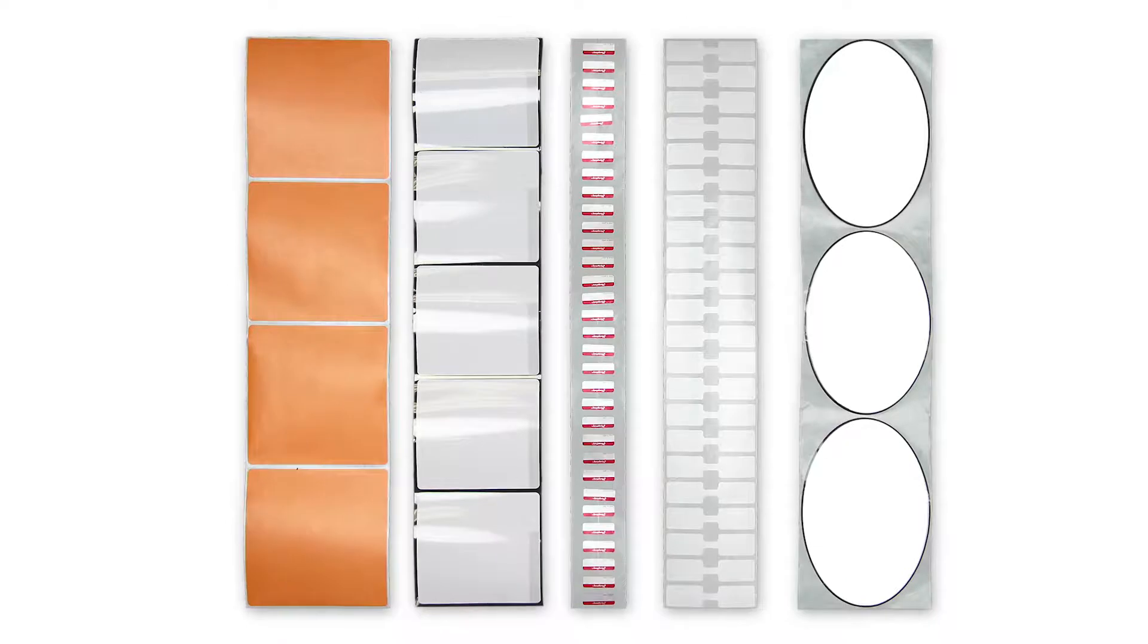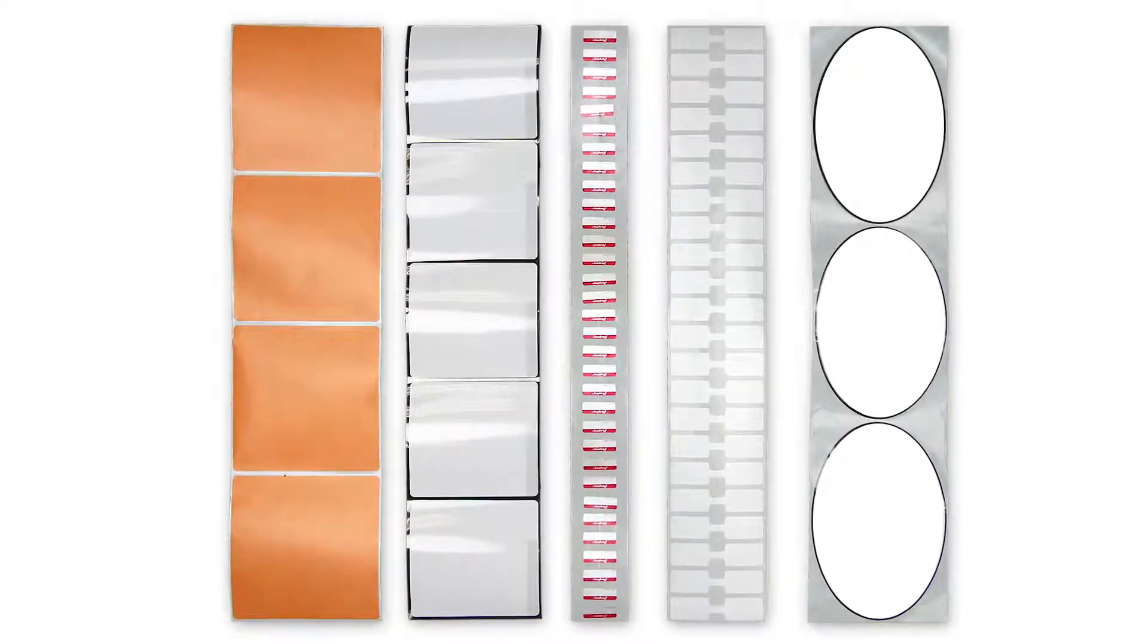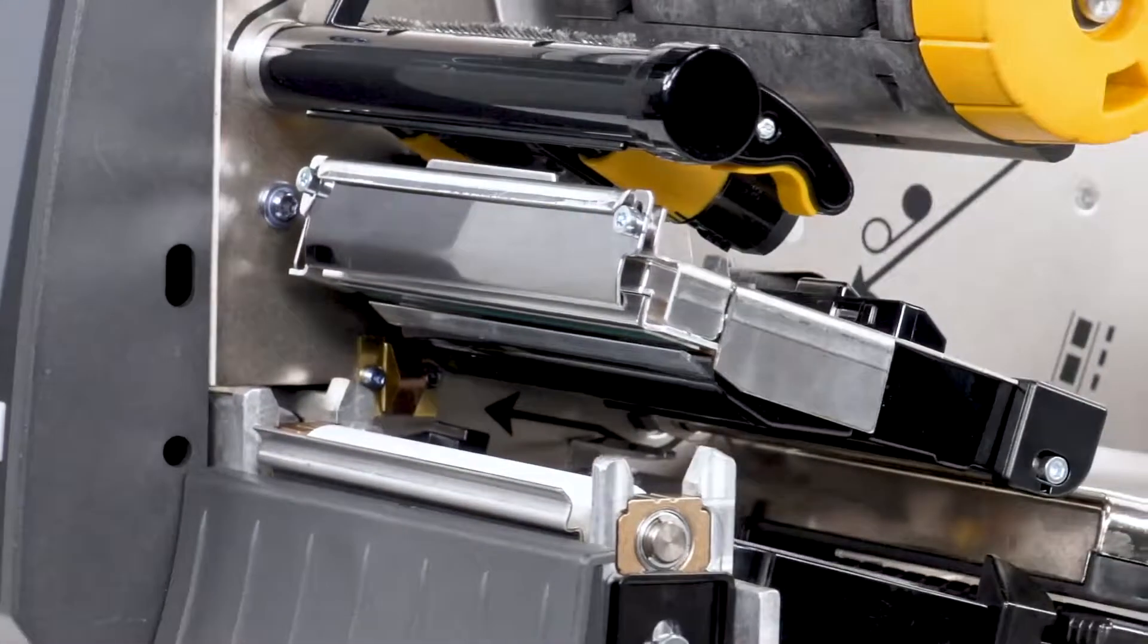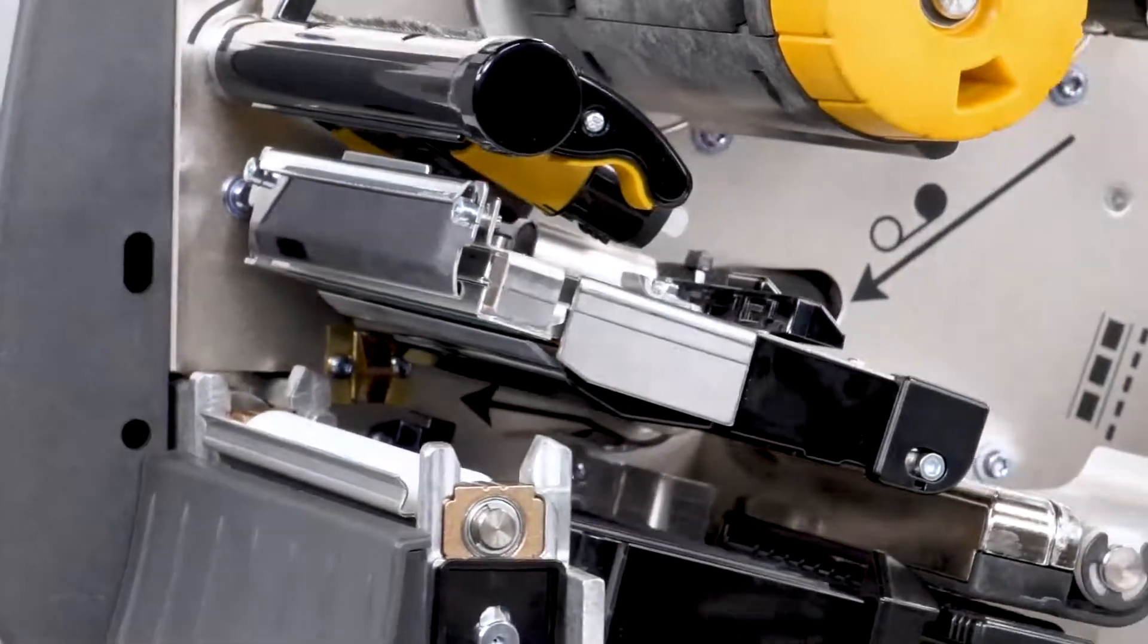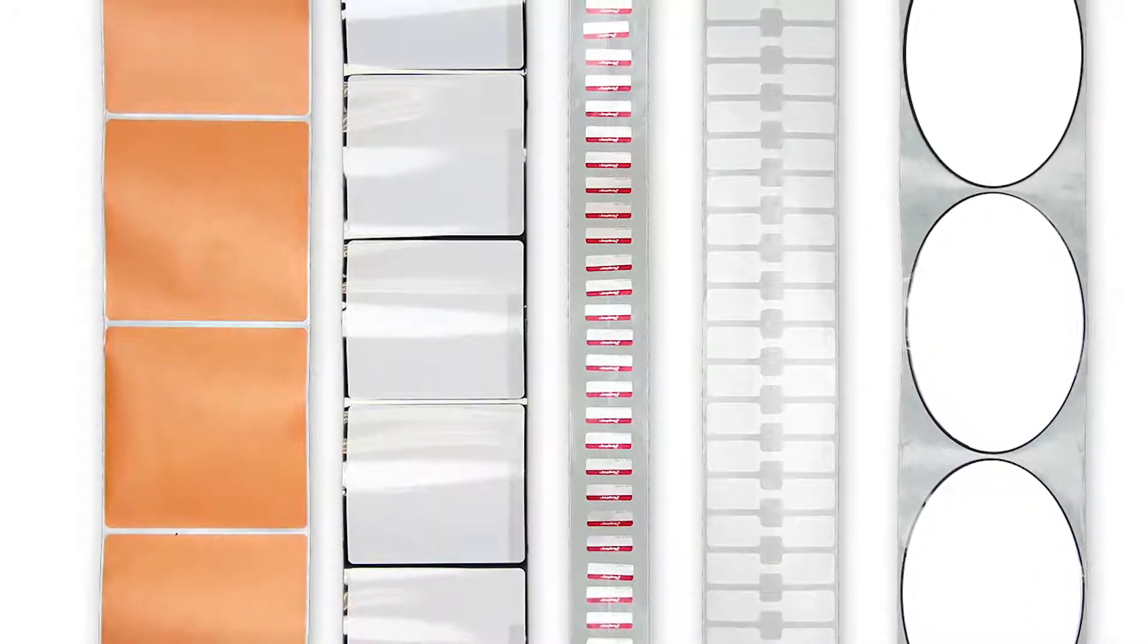In order to place the image in the correct position on the media, we must first identify the features in the media you'd like the printer to detect. Second, you must make sure the sensors in your printer are set up to detect those features. Most media contains features that identify the start position.